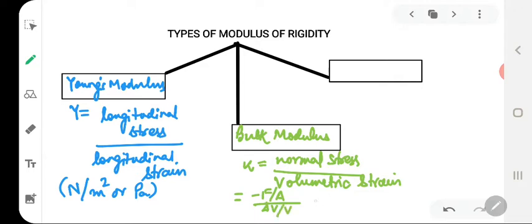As there is a decrease in volume that is why we put a negative sign. Now F by A is equal to pressure. So we can write down minus PV divided by delta V. Now the SI unit of bulk modulus is also Newton per meter square. At this point we shall also define a term called compressibility. Compressibility of a material is the reciprocal of its bulk modulus of elasticity.